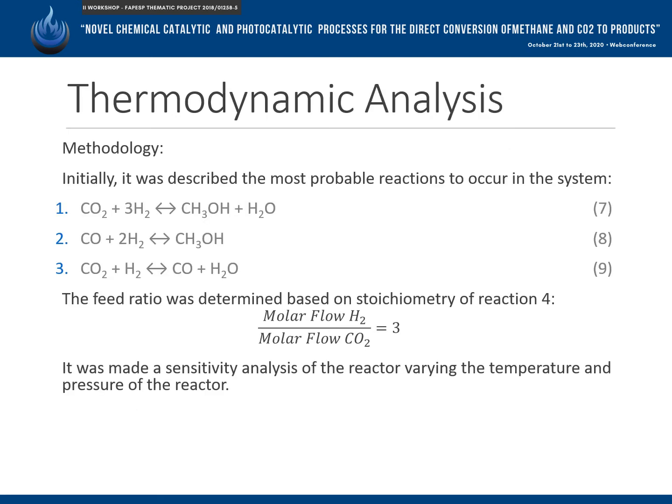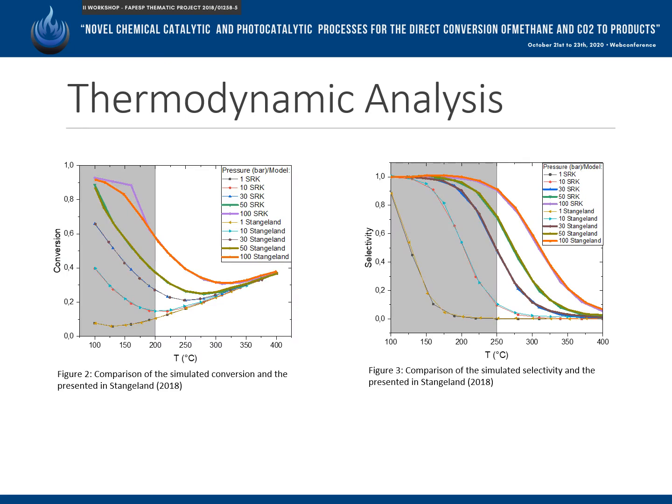For the thermodynamic analysis, the most probable reactions to occur in the reactor were described based on literature findings, presented as equations 7, 8, and 9. The feed ratio was determined based on the stoichiometry of equation 7, resulting in a ratio equal to 3. A sensitivity analysis of the reactor was made, varying the temperature and pressure of the equipment. Figures 2 and 3 show the results for conversion and selectivity, respectively, from the simulation using the Soave-Redlich-Kwong model and the results presented in the literature.